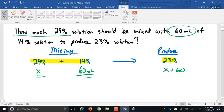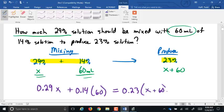So then my equation will become, remember it's concentration times amount. So 29% is 0.29 times that amount of X, plus, I have the 14% is 0.14 times that amount of 60. That's going to equal, on the other side, 23% is 0.23 times that amount of X plus 60.